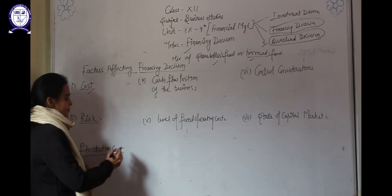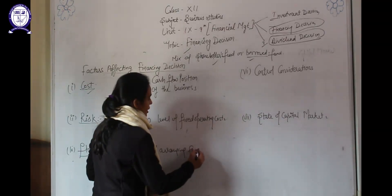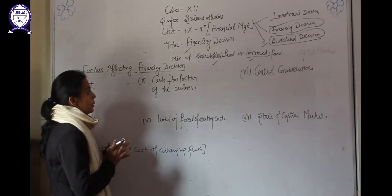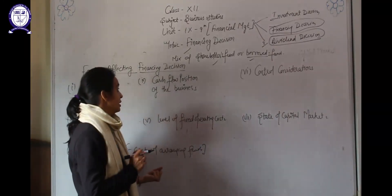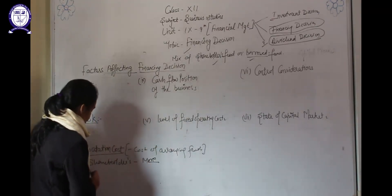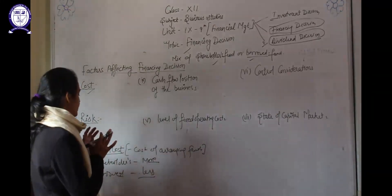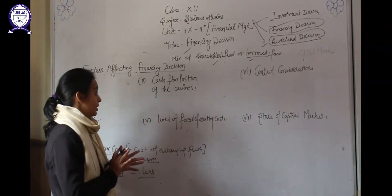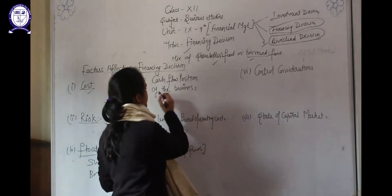Now, flotation cost — the cost of arranging funds. Suppose a company arranges funds by issue of shares; the company has to pay for the prospectus, advertisement, brokers, and underwriters. So in the case of shareholder funds, there is more flotation cost, and in the case of borrowed funds, there is less flotation cost. The company has to decide if it is in a condition to bear flotation cost. If yes, they can use shareholder funds; if not, the company should use borrowed funds.